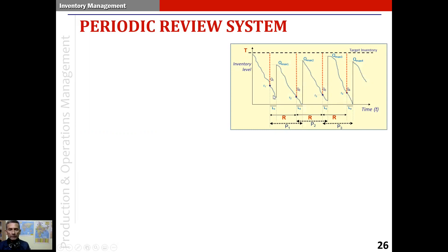This system works as follows: the inventory position is not continuously monitored. Rather, we review the inventory position at fixed periods of time, and that period between two consecutive reviews is known as the review period.